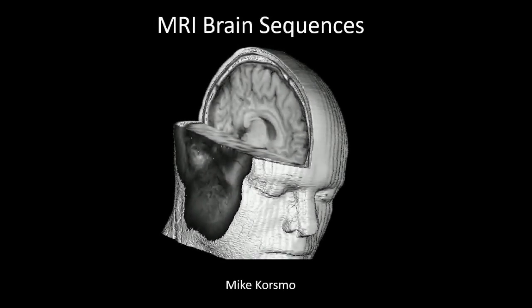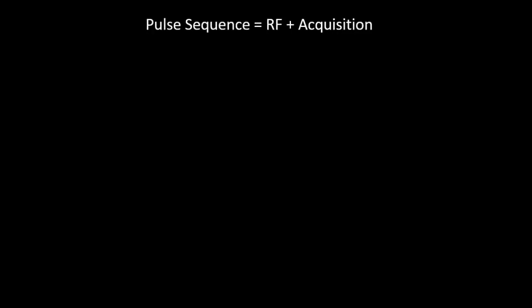Hello everyone, welcome back. Today we've got a brief talk on some of the major MRI brain sequences that are useful to neurologists and might be useful to you on your rotation if you're a medical student. We're going to go over the major ones and the ones that can be a little bit confusing. We're not going to cover ones like bold imaging, perfusion, or MRA. There are a lot of sequences out there and we're just going to focus on the most common and most important. So let's get started.